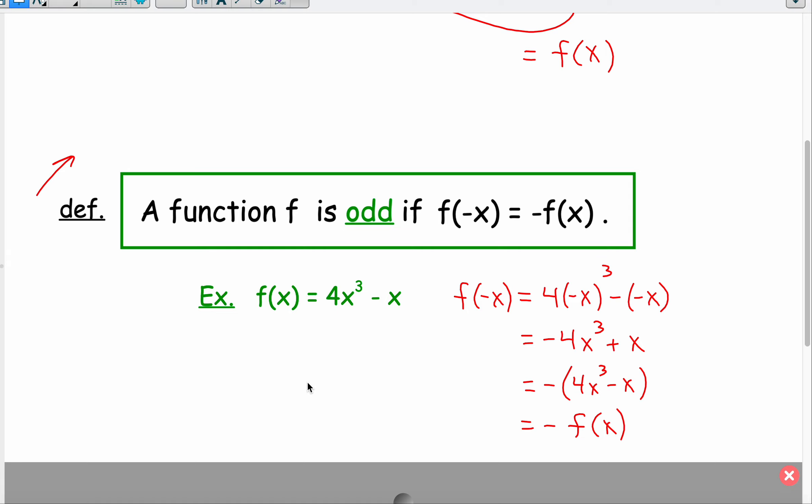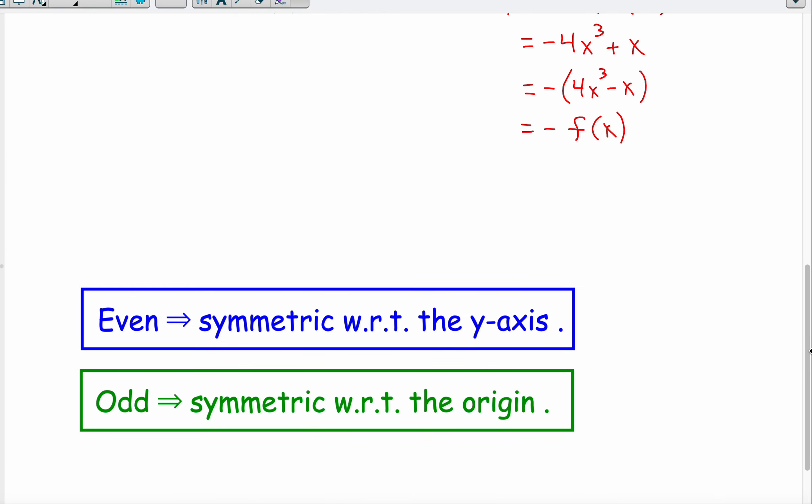So even and odd functions, if it's even, it's symmetric with respect to the y-axis, or wrt, with respect to. And if it's odd, it's symmetric with respect to the origin.